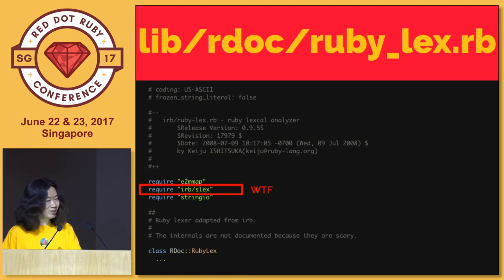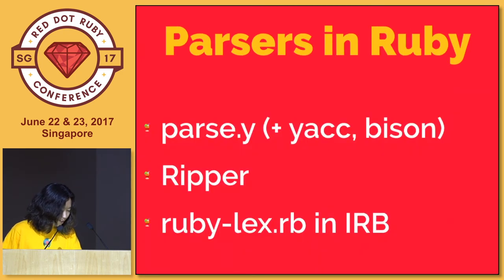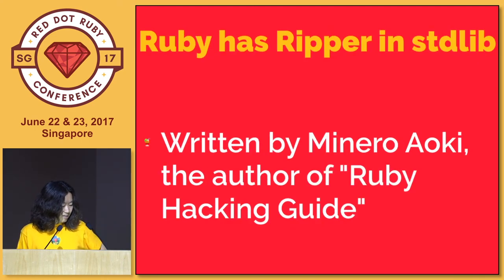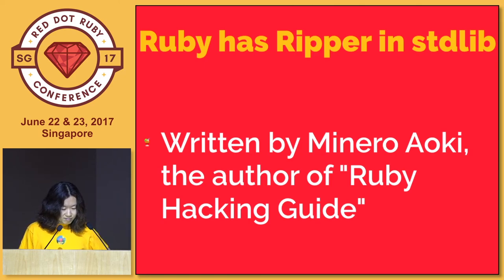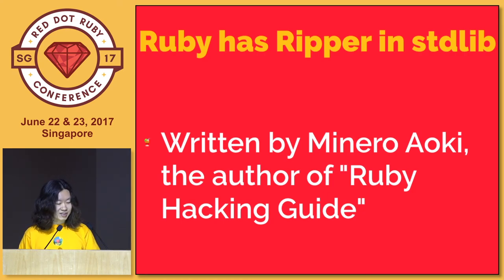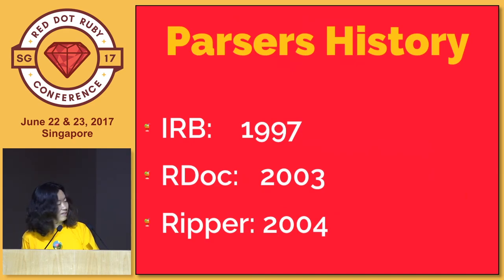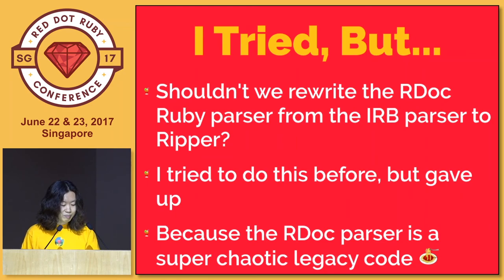So there are three parsers in Ruby: parse.y, Ripper in the standard library, and this IRB parser thing. Ripper is a Ruby parser in the standard library, so I thought RDoc should use this instead of creating its own parser. Why doesn't RDoc? Because RDoc was created before Ripper was created. I tried to rewrite the RDoc parser to use Ripper, but I just failed - it was too tough.